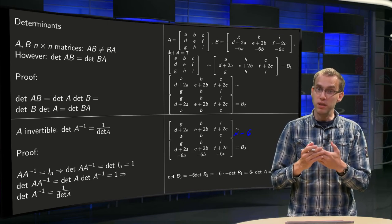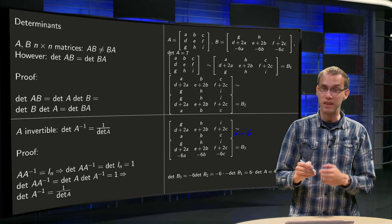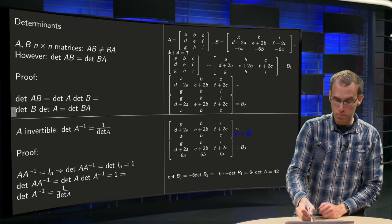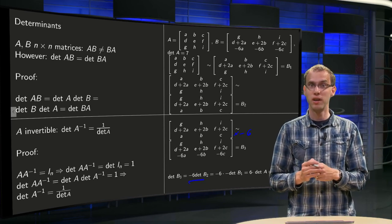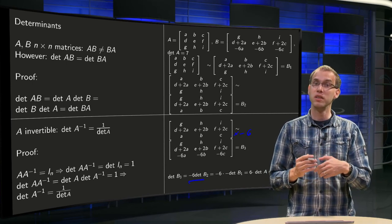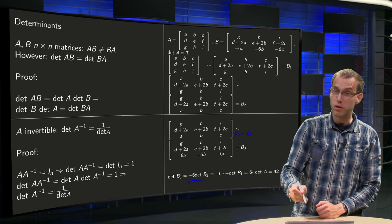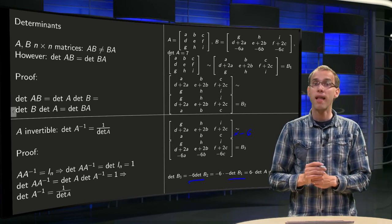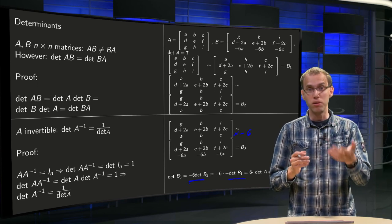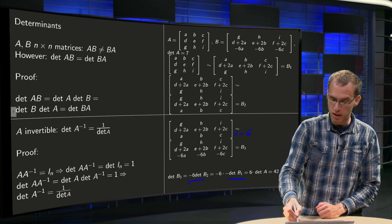Well, we got B3 out of B2 by multiplying one row by minus 6, which means that we get the determinant of B3 out of the determinant of B2 by multiplying the determinant of B2 by minus 6. We got B2 out of B1 by interchanging one row, which means that we get the determinant of B2 out of B1 by multiplying by minus 1. So determinant B2 equals minus 1 determinant of B1. And we got B1 out of A by adding a multiple of a row, so that doesn't change the determinant, so det B1 equals det A.